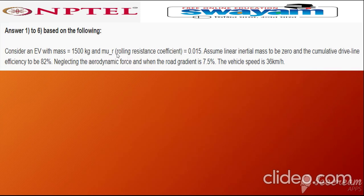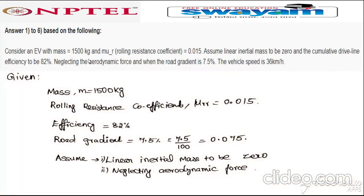The rolling resistance coefficient μ_rr is 0.015. Assume linear inertia mass to be 0 and the cumulative driveline efficiency to be 82%. Neglecting aerodynamic force, and when the road gradient is 7.5%, the speed is 36 km/h. So: mass = 1500 kg, μ_rr = 0.015, efficiency = 82%, road gradient = 7.5/100 = 0.075. Force due to linear inertia is zero and force due to aerodynamics is also zero.